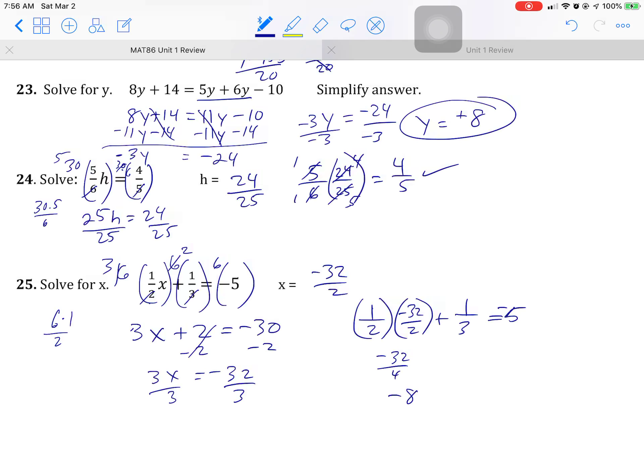This would be negative 32 over 4, which is negative 8. Negative 8 plus 1 third. Oh, this is a 3. That's why. This is a 6. 6 into 32. Let's reduce that. It's not going to be an 8. Let's get this out of the way. If you reduce this by 2, this is going to be negative 16 divided by 3.